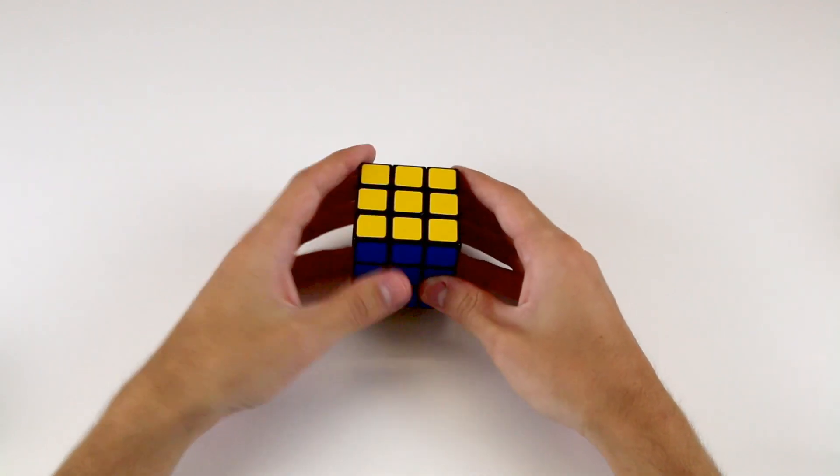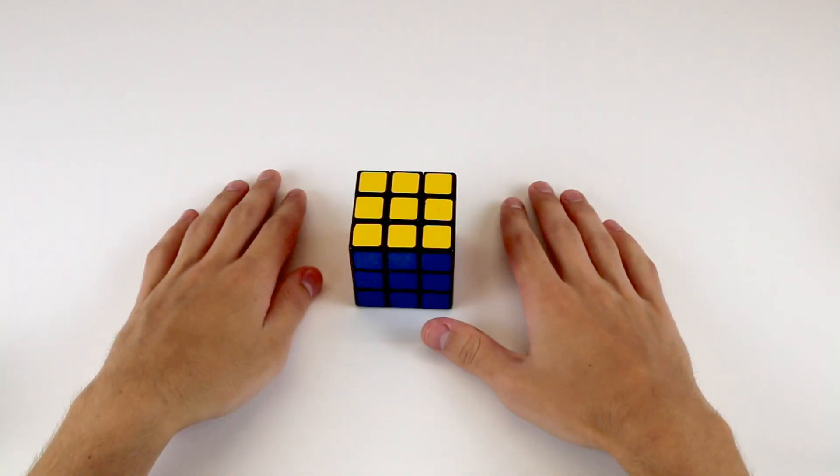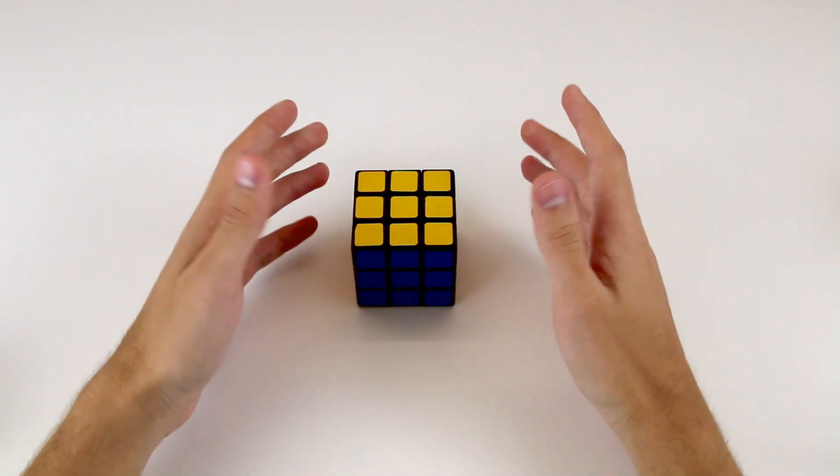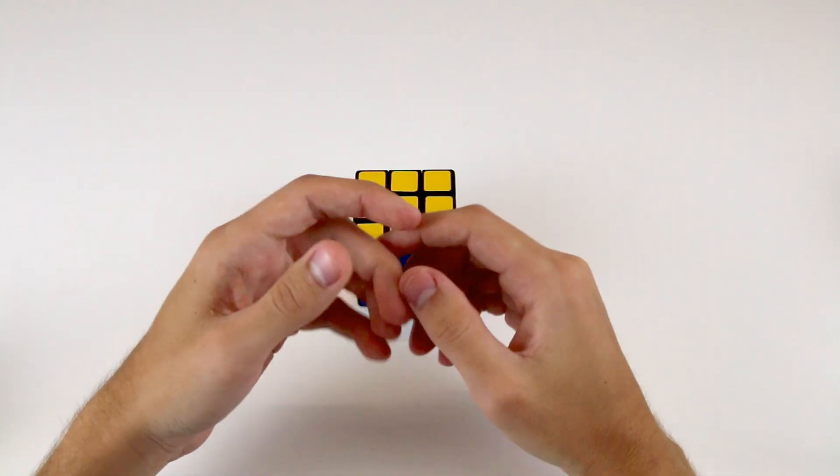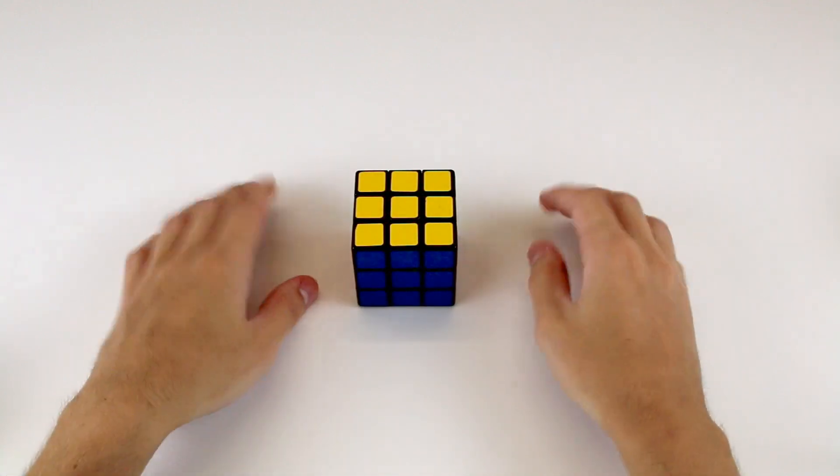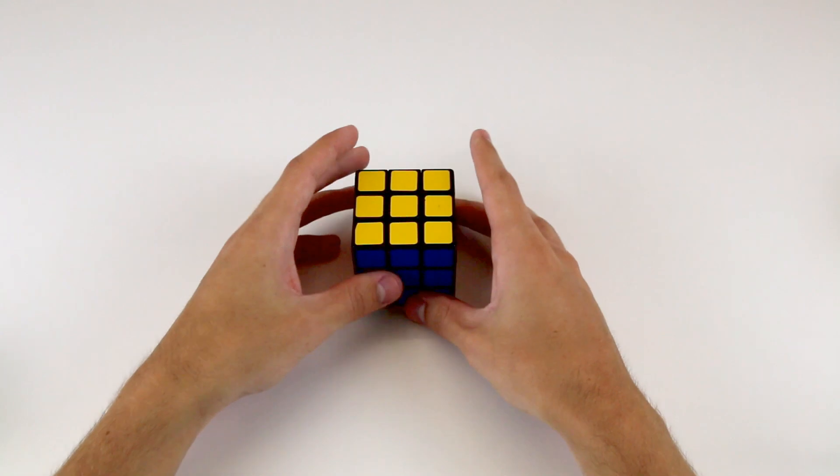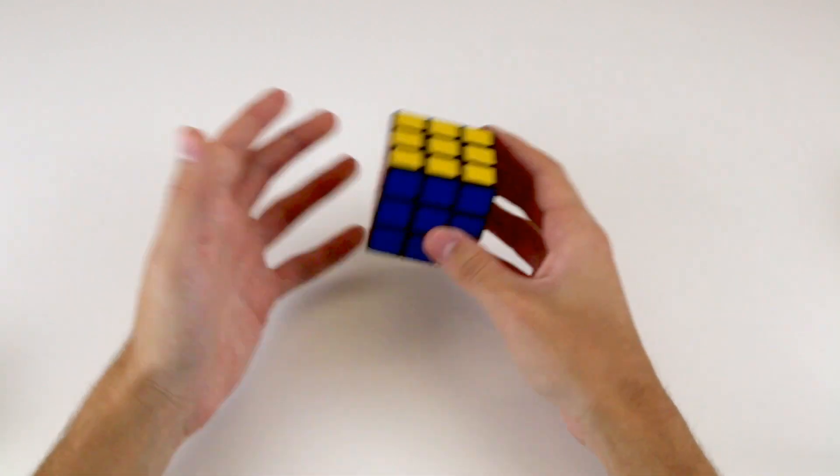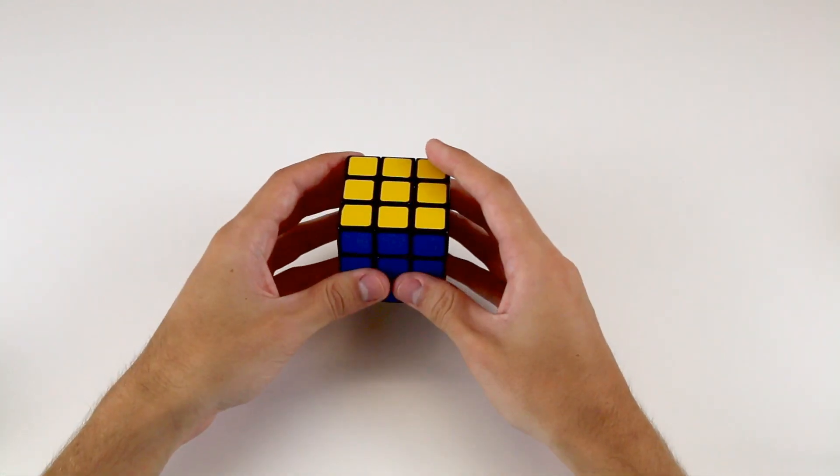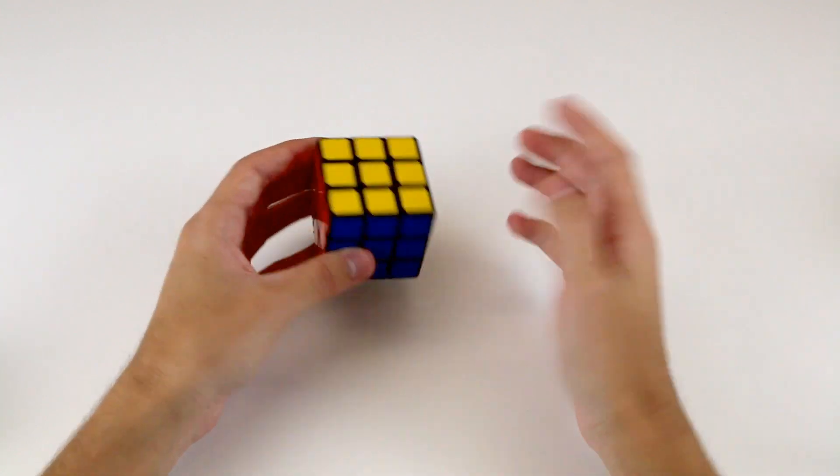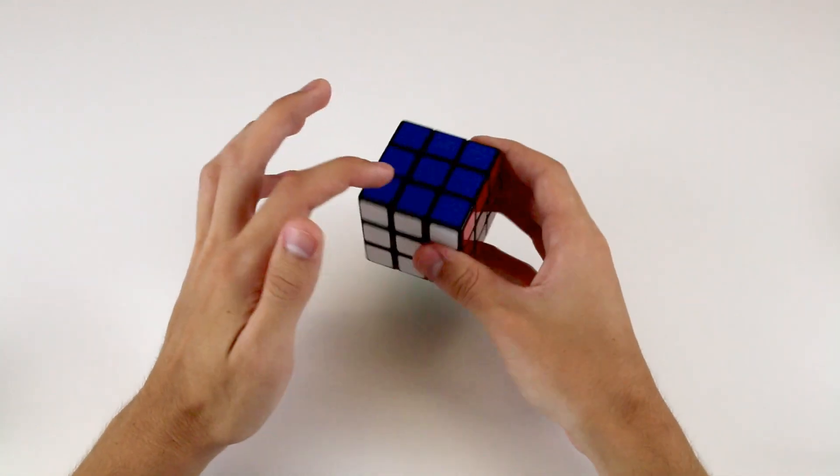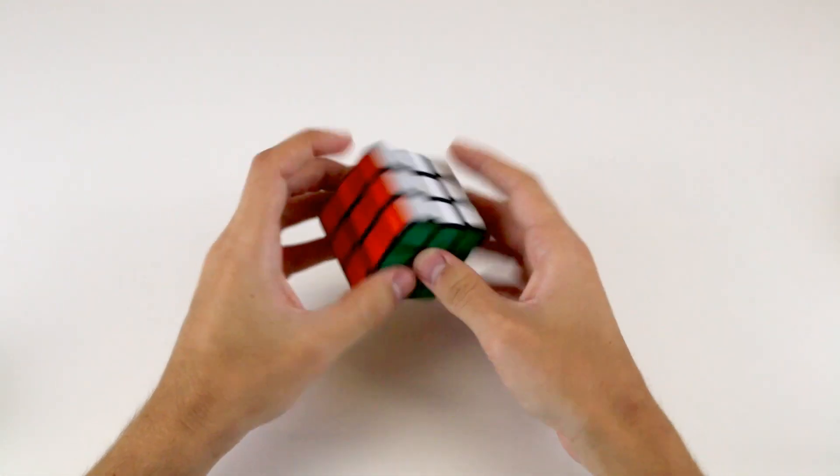If your cube has a slightly different color scheme, don't worry, this won't make it any more difficult. But what I want you to do now is just check whether the color scheme on your cube matches the one on mine, and if not, familiarize yourself with your cube's color scheme. Know which colors are opposite one another, and maybe write that down or just remember it. So most cubes will be just like this, have yellow opposite white, blue opposite green, and orange opposite red.